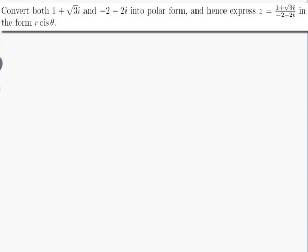The question is convert both 1 plus root 3i and minus 2 minus 2i into polar form and hence express z which is equal to 1 plus root 3i over minus 2 minus 2i in the form r cis theta.